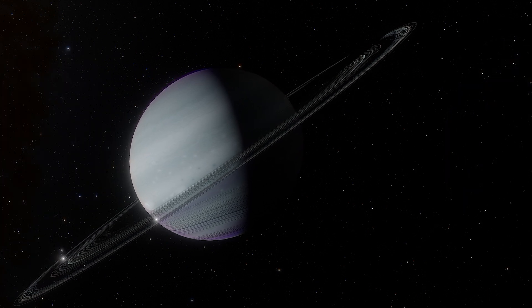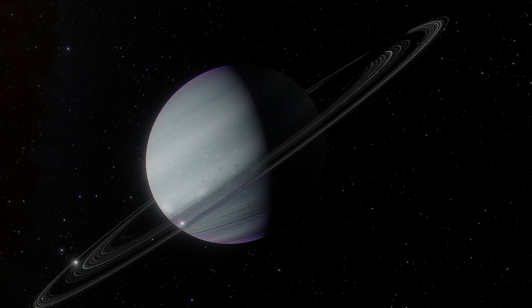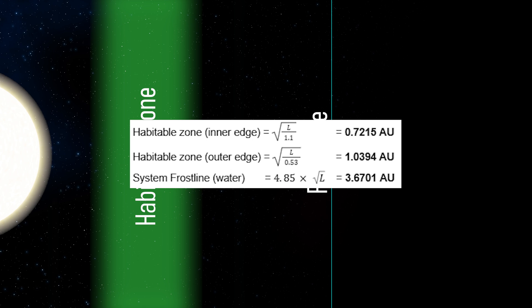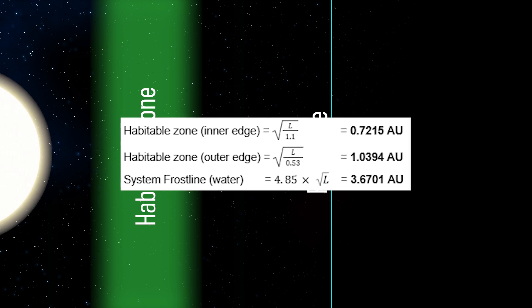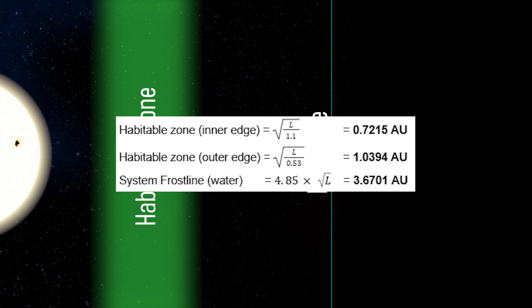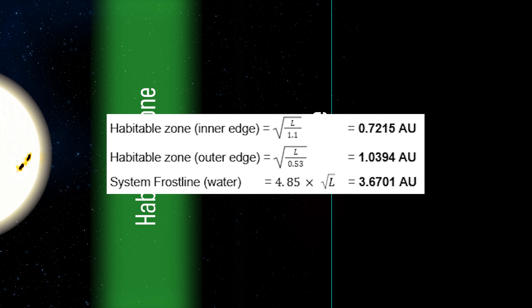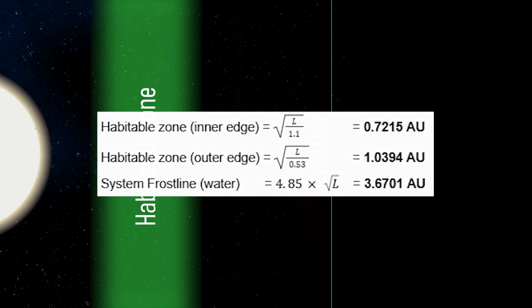Gas giants, while they can exist within the frost line, cannot form there. So to scale our model these two are essential. We can calculate the inner edge of our habitable zone by dividing Ojor's luminosity by 1.1 and then taking its square root. For the outer edge we do the same but divide by 0.53. And then for the system's frost line we multiply the luminosity's root by 4.85.